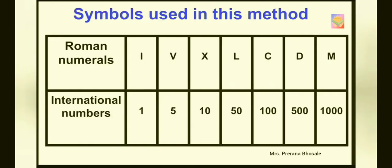In this method, there are certain symbols used to write numbers. Here is the list of symbols: the letter I is the symbol used for 1, V for 5, X for 10, L for 50, C for 100, D for 500, and M for 1000.